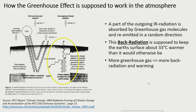In this video I will focus on the lower atmosphere. Before I talk about the saturation of the CO2 absorption in the atmosphere, we will have a short look at how the atmospheric greenhouse effect is supposed to work. The Earth's surface, heated by the Sun, emits infrared radiation. A part of the outgoing IR radiation is absorbed by greenhouse gas molecules and re-emitted in a random direction. This back radiation is supposed to keep the Earth's surface about 33 degrees centigrade warmer than it would otherwise be. The implication of this mechanism is that higher greenhouse gas concentrations cause more back radiation and thus more warming of the surface.